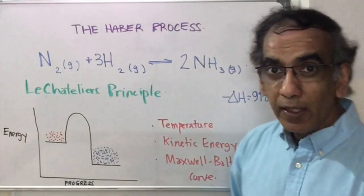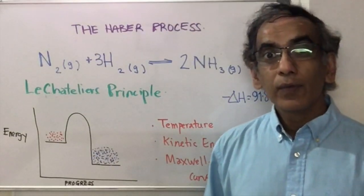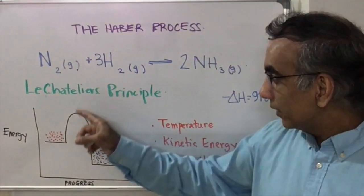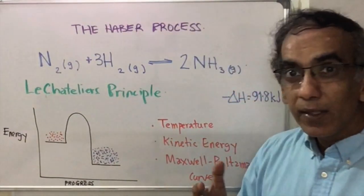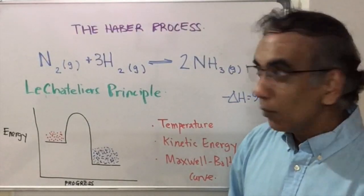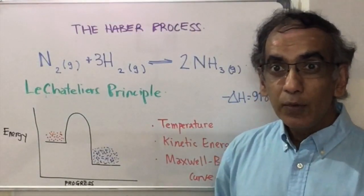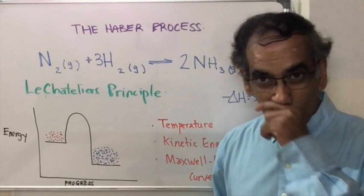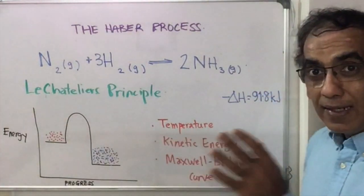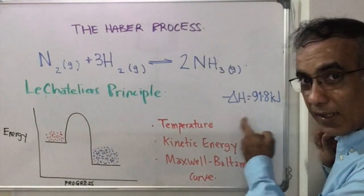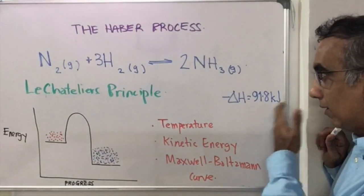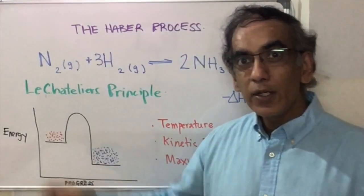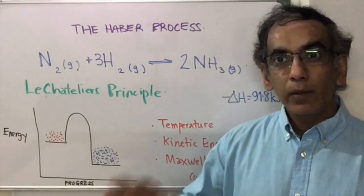In studying the Haber process, it's very likely that you've combined it with your study of Le Chatelier's principle to help you explain and understand what's going to happen if you apply a high temperature. You might be reading in your books and hearing from your teachers that the Haber process is an exothermic reaction, with a negative delta H of 91.8 kilojoules.